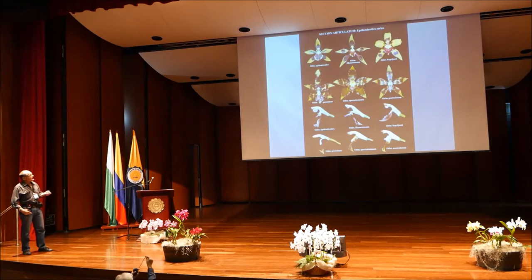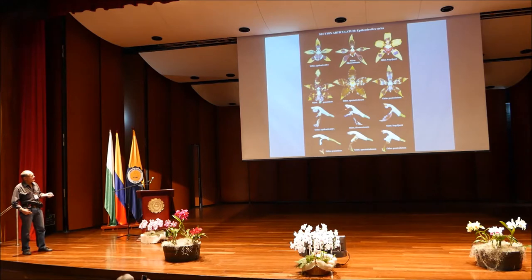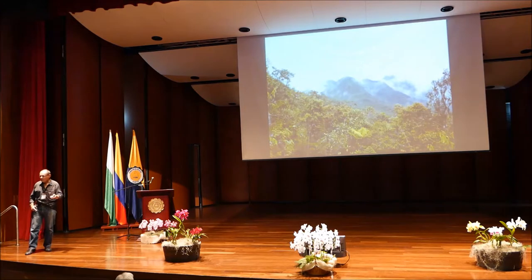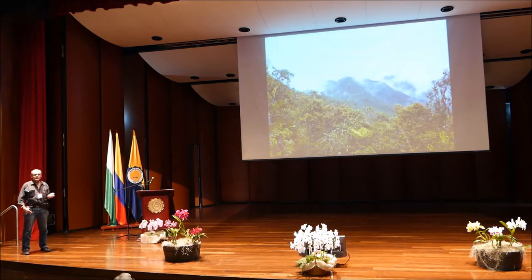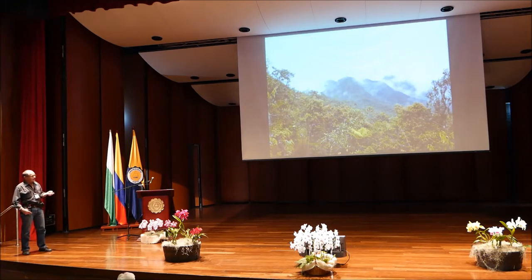Finally, in section Articulatum in the Epidendroidus series — the typical Odontoglossums — they have very long columns, the longest in the genus, with large rectangular rhomboid pollinia. Most of the species are in the Andean region and you have to look in cloud forests to find them. Some species in the Oncidioides section also occur in Central America.